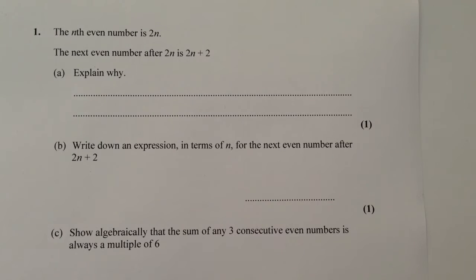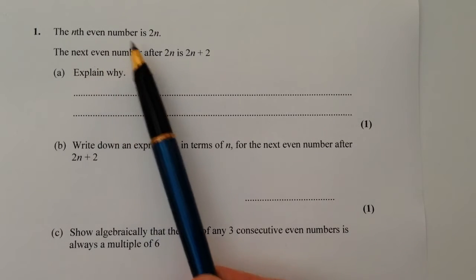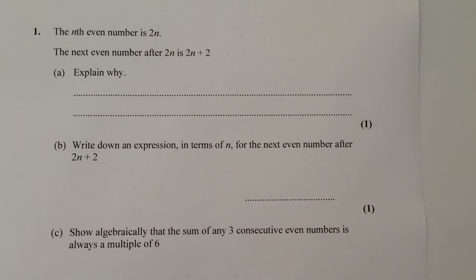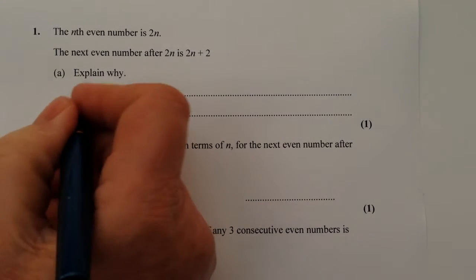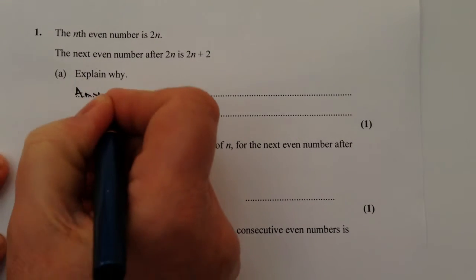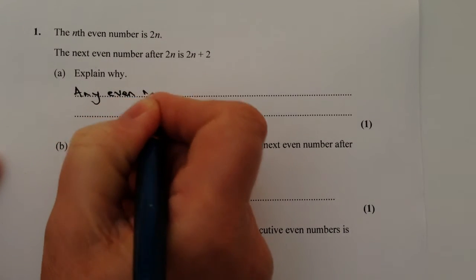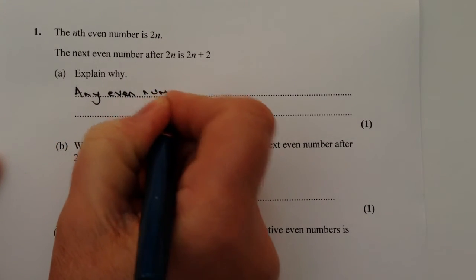The first one says the nth even number is 2n. We need to prove that. What they're really saying is that any even number is 2n, so let's just check that — we're saying that any even number is 2n.